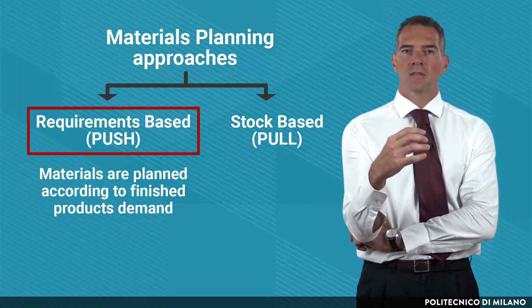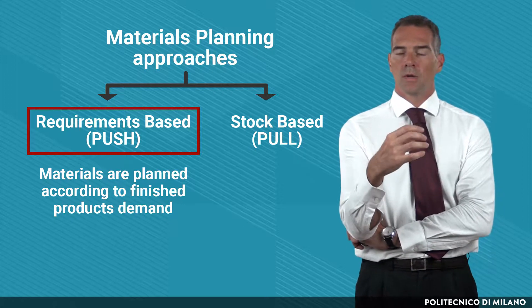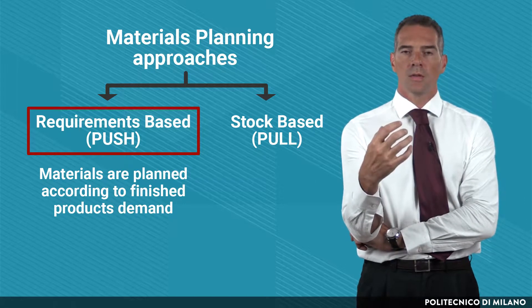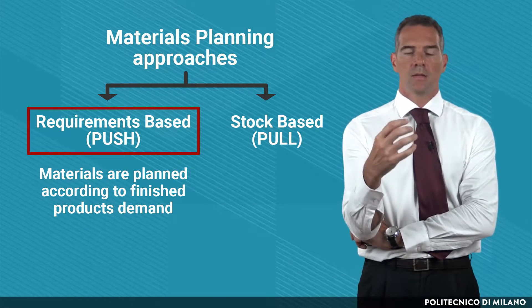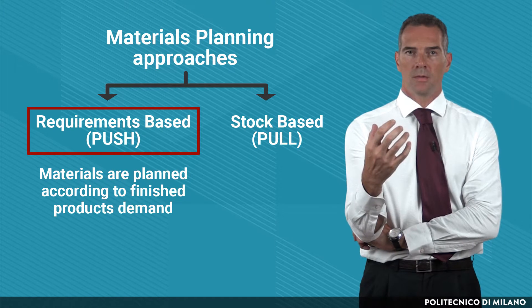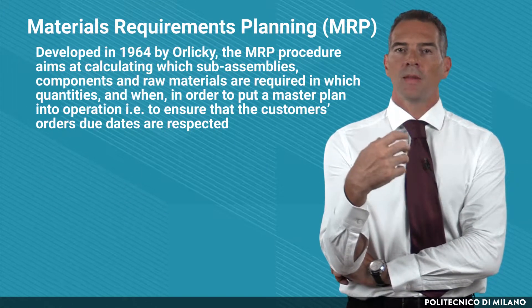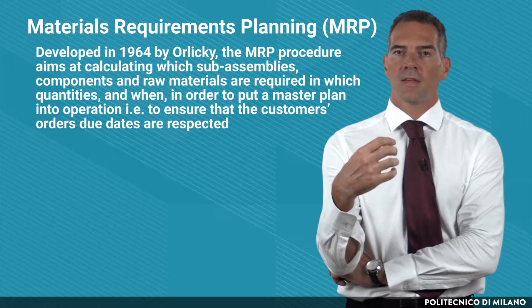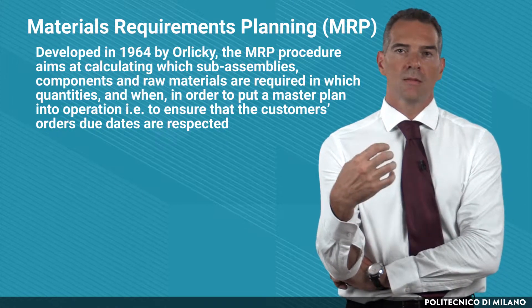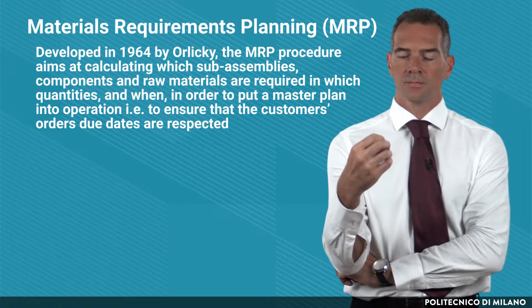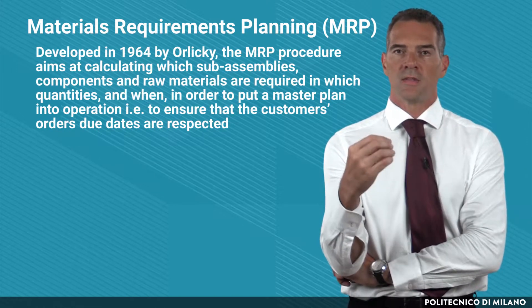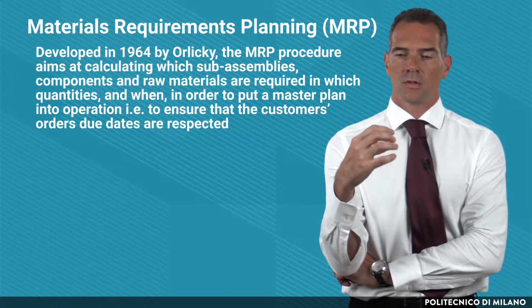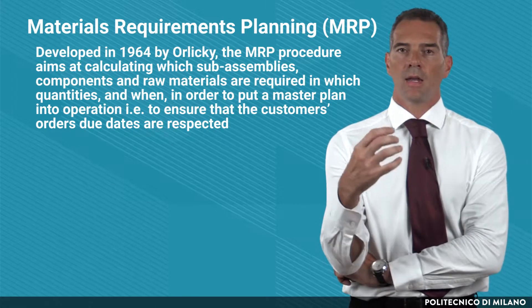Materials are planned according to forecasted demand of items as well as to already available orders, using data so that the actual requirements are computed. Developed in 1964 by James Orlicki, the MRP procedure aims at computing which subassembly components and raw materials are required to perform specific production and assembly activities, and when these materials should be made available and in which quantities.